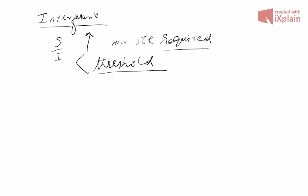The SIR will be decreased either by a decrease in signal power or by an increase in interference. So we have to design the system properly. As an example, suppose the required S/I ratio is at least 15 dB.